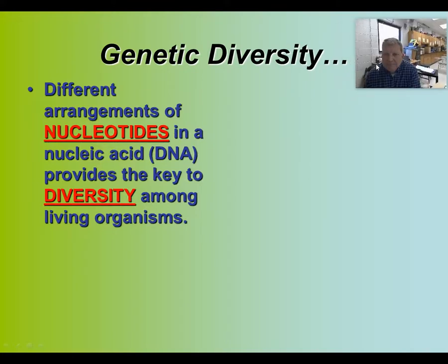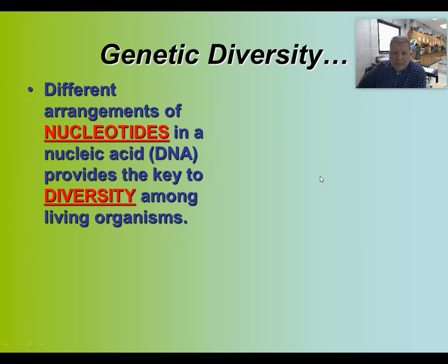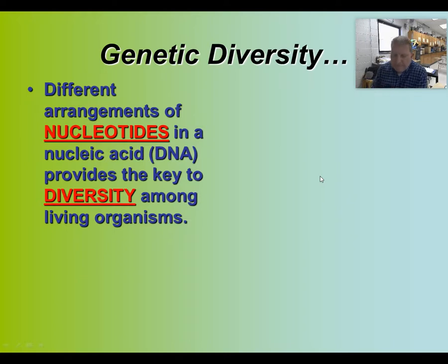Genetic diversity: different arrangements of nucleotides in a nucleic acid provide the key to diversity among living organisms. All living organisms have those same four nitrogenous bases — A, T, C, and G — and the order of them is what makes organisms different from one another.